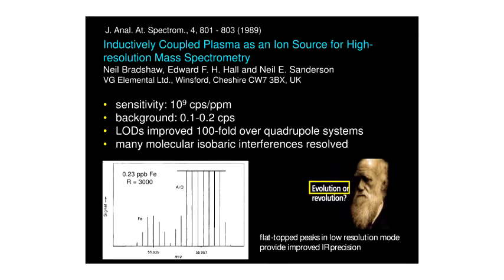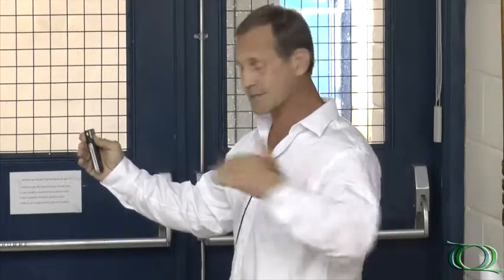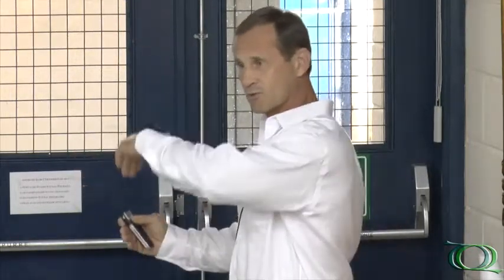This is an evolutionary process, but equally important: with a high-resolution instrument operated in low-resolution mode, you can get flat-topped peaks, meaning any small instability in the magnet still keeps you on the peak. This allows very high-precision isotope ratio measurements. Moreover, the sensitivity of these devices — due to enhanced transmission efficiency and very low vacuum — increased by two to three orders of magnitude over a quadrupole-based device, and very low background gives limits of detection improved 100-fold.